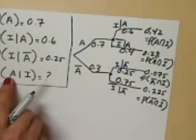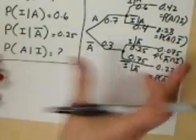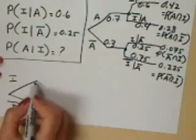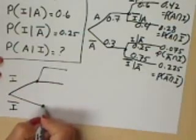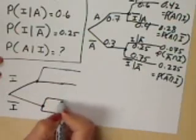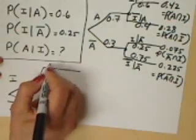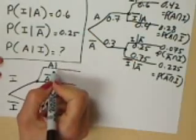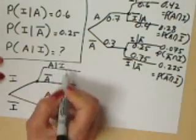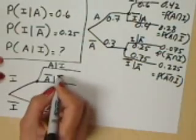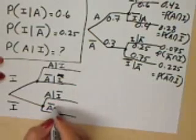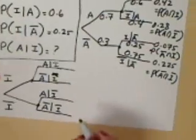But we want to know the probability of A given I. So why don't we flip the tree? If I flip the tree, now I'm going to start my analysis with increase in sales and no increase in sales, then expand off to the other events — advertising or no advertising. Remember, these are conditional probabilities: so this is given I, this is given I, this one is given I bar, and this one is given I bar — no increase in sales.